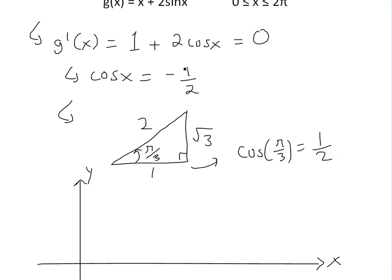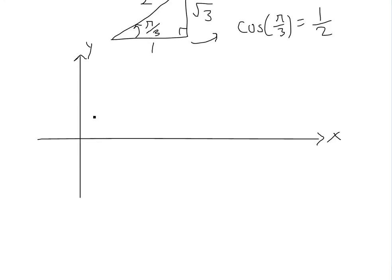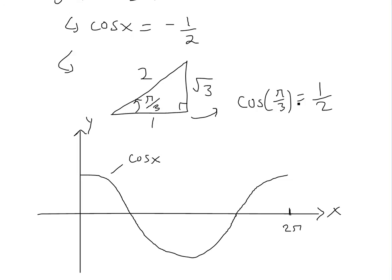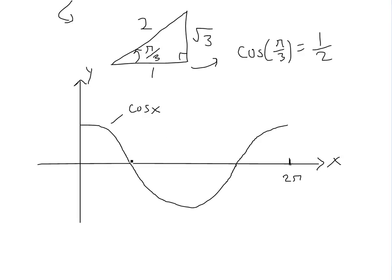But here we need when cos x equals negative one over two. I like just graphing it from zero to two pi — this is just cos of x. We know that at one over two, it corresponds to pi over three. To find out when it's going to be negative one over two, we have to use this pi over three. So pi over three is going to be somewhere over here, and this is going to be roughly one over two. Now we need to use our trigonometric symmetry here.